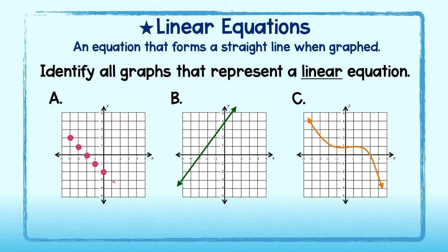Okay, let's take a look. If I draw a line through the points on graph A, I see a straight line appear. Therefore, this graph does represent a linear equation. The line on graph B is also a straight line and therefore also represents a linear equation. Lastly, the line on graph C is curved and therefore does not represent a linear equation. Good work!